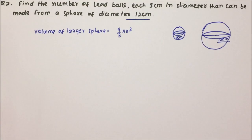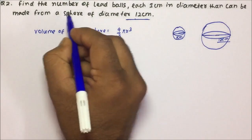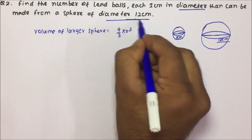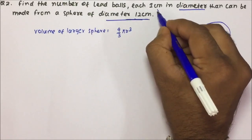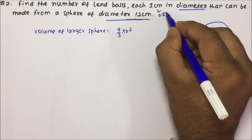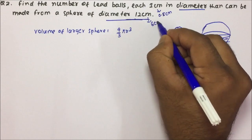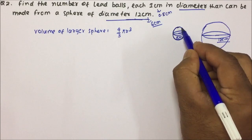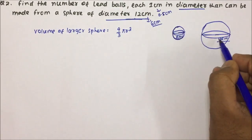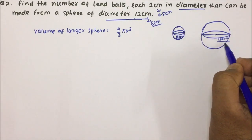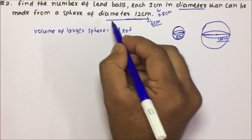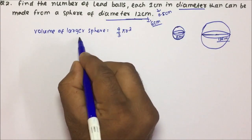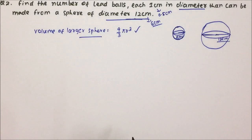Now moving towards question number 2. Find the number of lead balls each 1 centimeter in diameter that can be made from a sphere of diameter 12 centimeters. If we are talking about diameter 1 centimeter, the radius will be 0.5 centimeters, and here the radius will become 6 centimeters. We have one smaller sphere of diameter 1 cm and a bigger sphere of diameter 12 cm. Let's calculate the volume of the larger sphere — volume = 4/3 π r³.